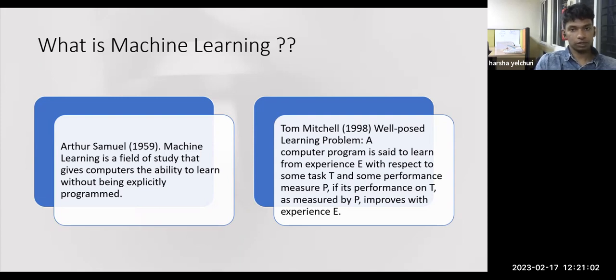Tom Mitchell's definition: a computer program is said to learn from experience E with respect to some task T and some performance measure P if its performance on T as measured by P improves with experience E. In the checkers program, the experience E is the program playing the game again and again with itself. The task T is to play checkers. The P is, given a new opponent, what is the probability with which it's going to defeat that new opponent.